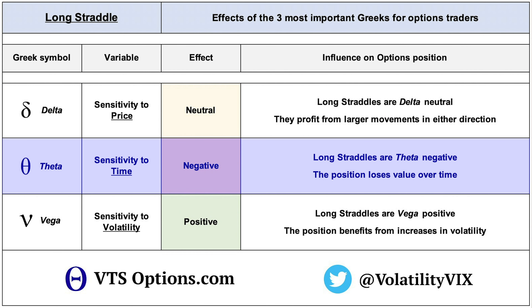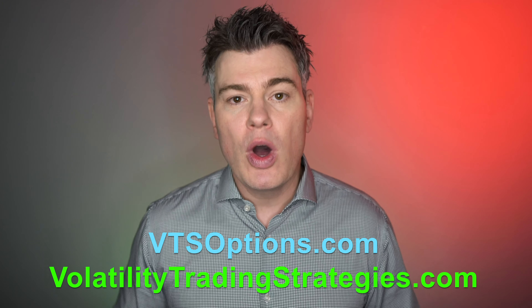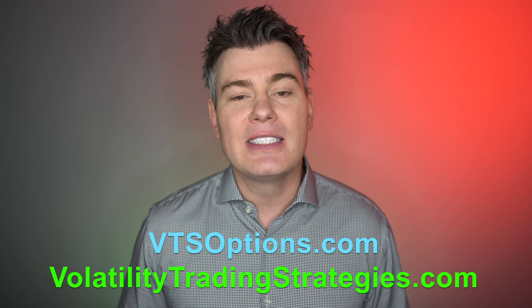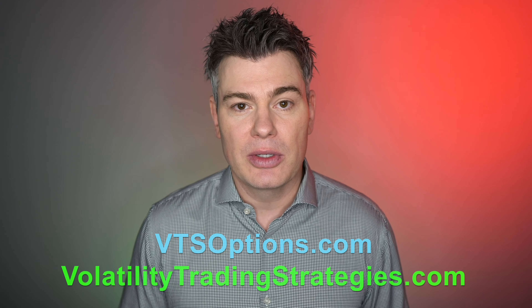Theta is an option's sensitivity to time. Long straddles are theta negative, which means they will lose value with the passage of time. And lastly, they are vega positive, meaning they benefit from increases in volatility and lose value with decreases in volatility. So they are best opened when volatility is expected to rise. It's always best to learn through visuals, so let's go ahead and go into a trade example. And remember, if you do want more structure in your trading, you can always claim your free trial on my website and see what the VTS community is all about.